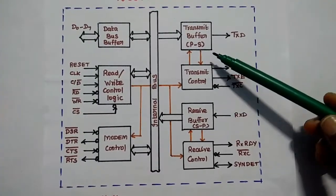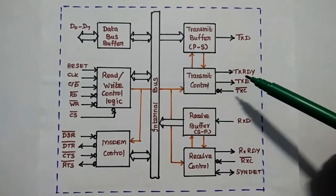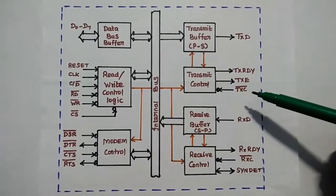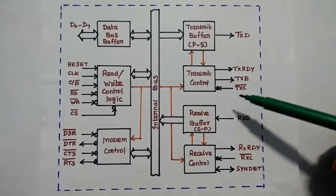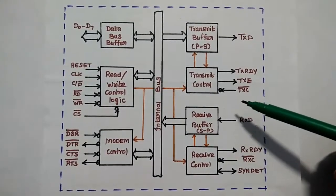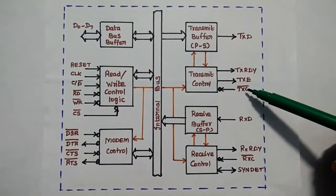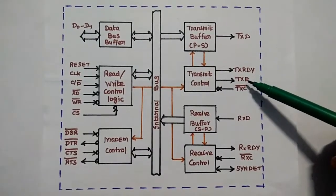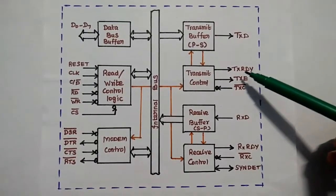The transmission is controlled by the transmit control unit. It has two output signals and one input signal. TXC bar is the transmission clock signal — it is an active low signal. In the 8251A, both transmission and reception have their own separate clock signals. TXE is the transmit empty signal and TXRDY means transmit ready signal.